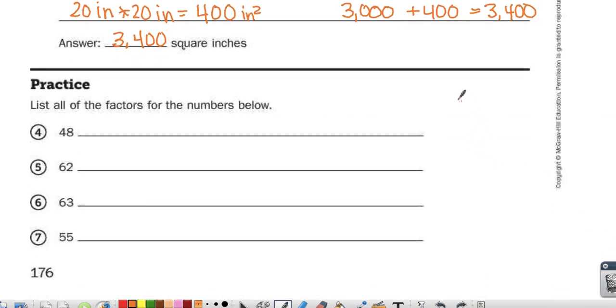List all of the factors for the numbers below, so you should have factor trees. I'm going to start with 48. 1 times 48 are factors, 2 and 24. 3, if I do 48 divided by 3, I get 16. 4 times 12 would be 48. 5 is not a factor because 48 doesn't end in 0 or 5. 6 times 8 is 48.